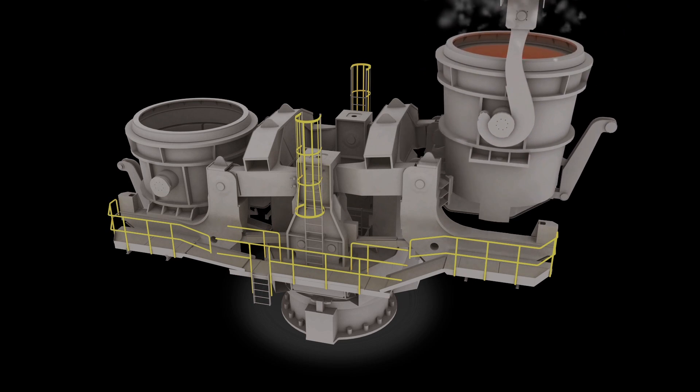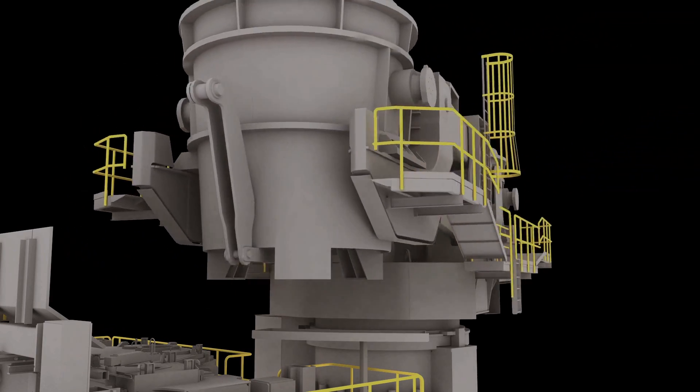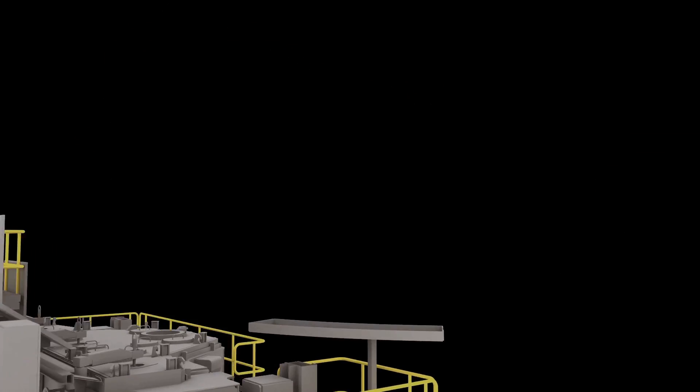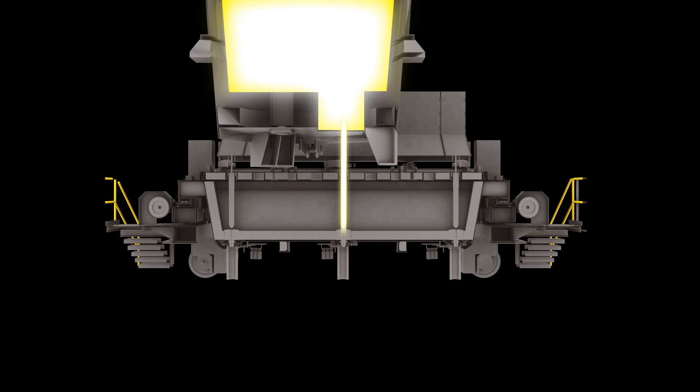Once the ladle is ready to cast, the turret rotates the ladle over top of the tundish. When the ladle reaches over the top of the tundish, a refractory valve opens to allow steel flow from the ladle into the tundish. During this process, a physical shroud and inert gas protect the steel stream from oxidation.